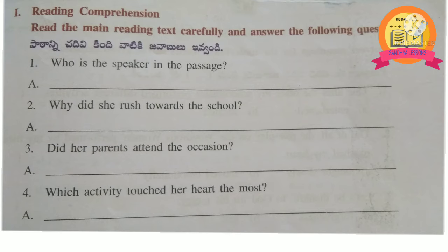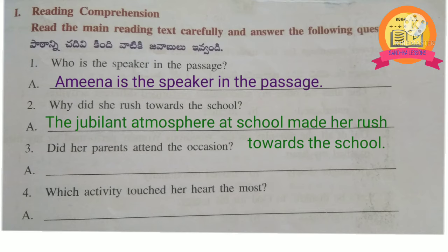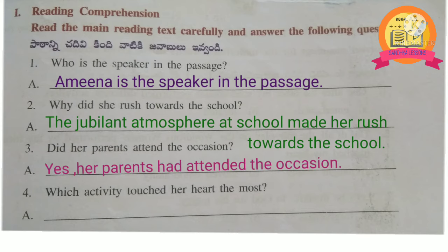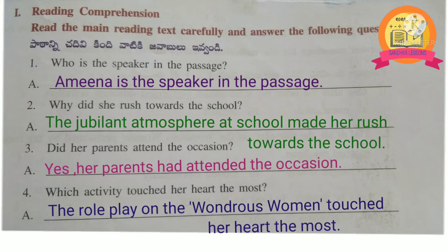Worksheet 5.5, 1st Roman: reading comprehension. Read the main reading text carefully and answer the following questions. 1st question: Who is the speaker in the passage? Amina is the speaker in the passage. 2nd question: Why did she rush towards the school? The jubilant atmosphere at school made her rush towards the school. 3rd question: Did her parents attend the occasion? Yes, her parents had attended the occasion. 4th question: Which activity touched her heart the most? The role play on the wondrous woman touched her heart the most.